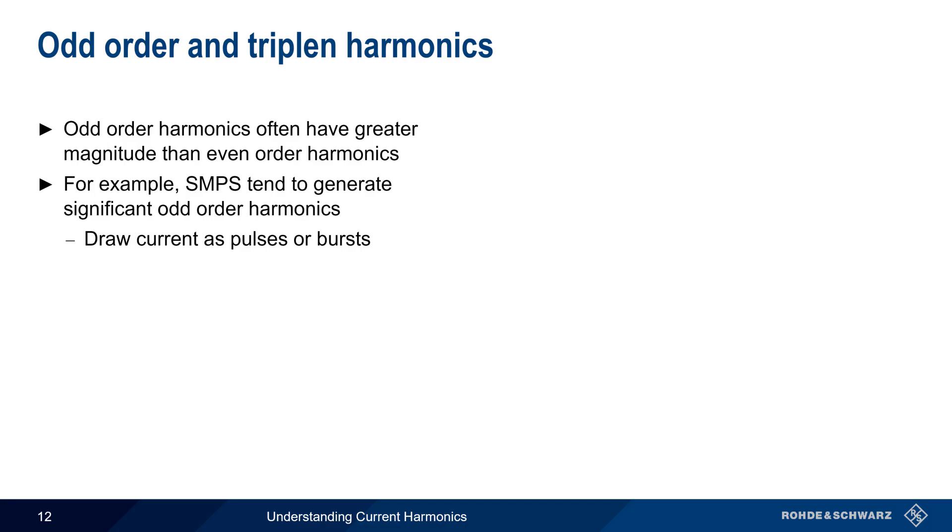A special case of odd-order harmonics are so-called triple-N or triplen harmonics, which are harmonics whose orders are odd multiples of the third harmonic, that is, third, ninth, fifteenth, etc.